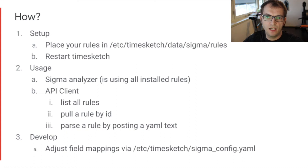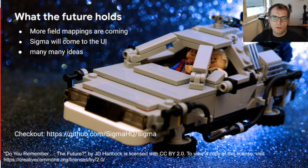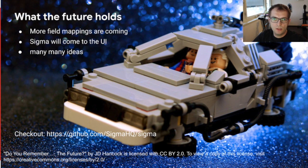Last but not least, if you want to develop either the Sigma code or develop rules, you should have a look at the /etc/timesketch/sigma config file. This file is used to make the field mappings. Looking forward, there is active work on increasing the field mappings. Note that our mappings are mostly built on output from Plaso as the data source. So if you are ingesting data from other sources, your field names might be different. The other big portion we focus on right now is the user interface. We are working on exposing the Sigma rules to the user interface so that you can explore your timeline data in a different way, and we have many more ideas to come.